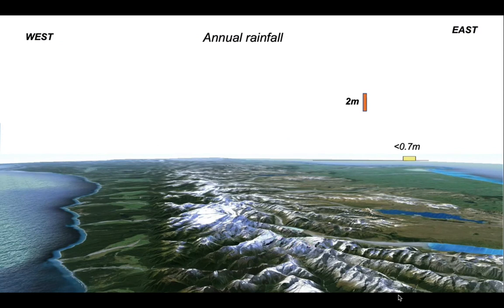Let's plot some annual rainfall totals across a profile. There's an orange scale bar for two metres — that's two metres of rainfall a year, which is quite a lot. The little yellow bar is the annual rainfall for Christchurch, which lies over on the east coast of South Island. That amount of rainfall is very similar to the annual rainfall for Aberdeen, for example. Over on the west coast, there's about three and a half metres of rainfall a year — about the same as the wettest inhabited place in Britain, which is Seathwaite in Cumbria.